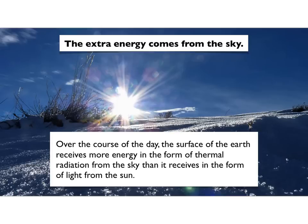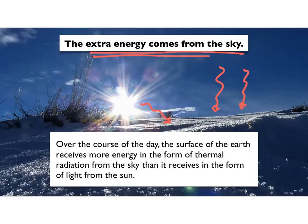There is extra energy striking the surface of the Earth. The Earth gets energy from the Sun, but it also gets energy from the sky. The blue sky above you is actually shining thermal energy down on you. Over the course of the day, the surface of the Earth receives more energy in the form of thermal radiation from the sky than it receives as light from the Sun. Sky shine is more important than sunshine in keeping the Earth warm — which is crazy to think about, but absolutely true.